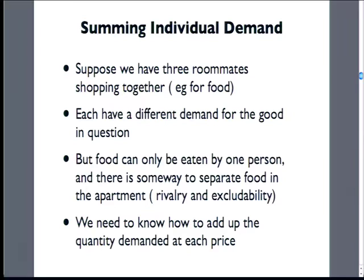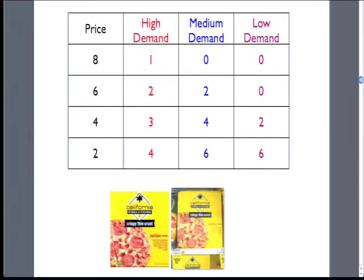They are shopping for food together, and each person is going to have a different demand curve for the food. This goes back to public versus private goods. The food they consume can only be consumed by them — it's rivalrous and excludable. So we're going to have separate parts in our refrigerator; I can only eat the food that I bought. For a private good, we need to add up our quantity demanded for each price.